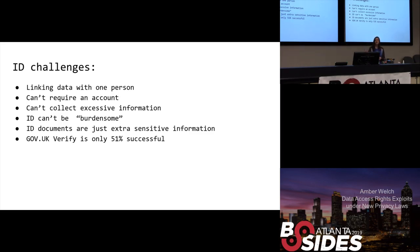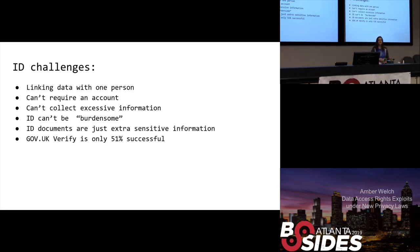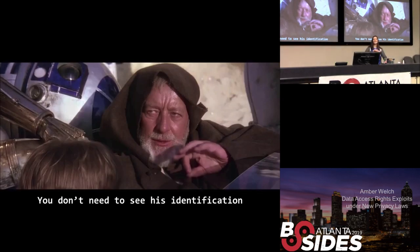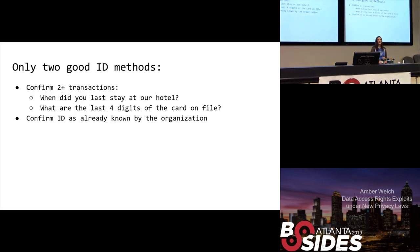The identity challenge is very complicated, especially because of the requirement to fulfill a DSR even where you don't have an account. California specifically says you cannot require somebody to have an account in order to fulfill a DSR. You can't link the data with one person potentially; you might not have a name, you might not have an account. But at the same time, you can't just reject it because it's difficult, you can't ask for excessive information. If you do take in identity documents, they still might not tell you who that person is — and now you've just collected even more sensitive information. Remember: you don't need identity documents. The only time you'd ever need a scan of somebody's ID is if you already had that information in the first place.